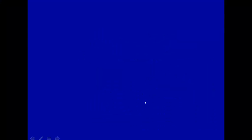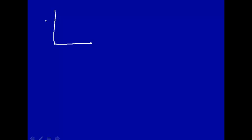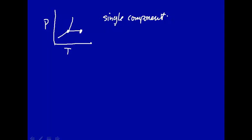If you remember from last lecture, we decided to study phase equilibria, and we said that typically what one does is make a pressure-temperature diagram and put on points of interest like a critical point, triple point, solid, liquid, and gas. And we considered that in detail for a single component, and we said for a single component, a single pure substance, we have two degrees of freedom.